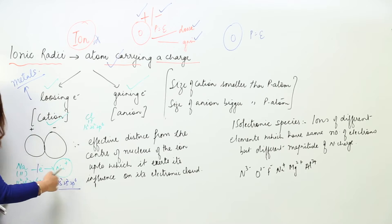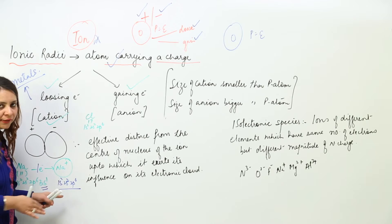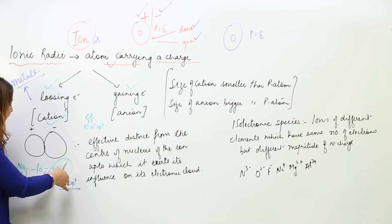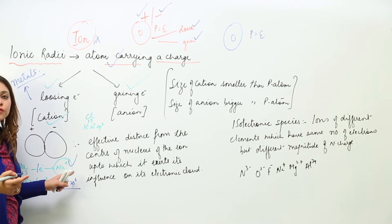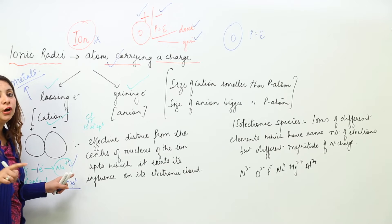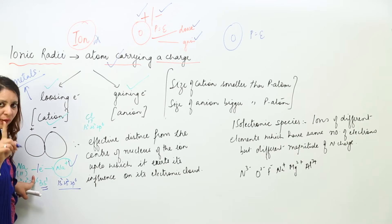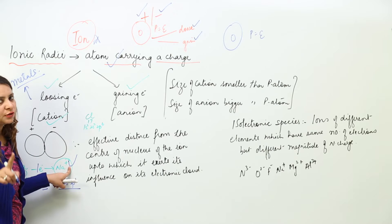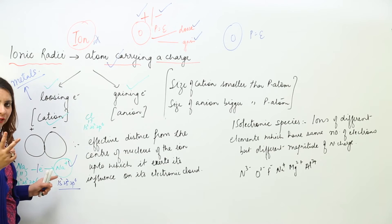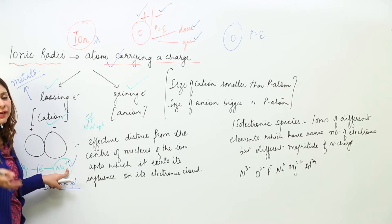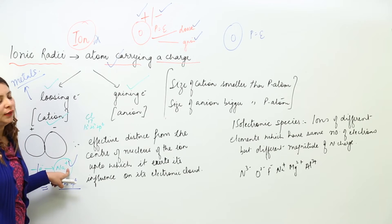The shell gets fully filled, meaning the shells present are completely filled and it becomes stable. After losing the electron, it acquires a positive charge equal to the number of electrons lost. Here it lost only one electron, so it acquires a one positive charge. If sodium were to lose two electrons, it would acquire a two positive charge.